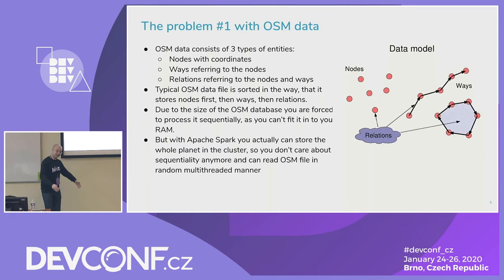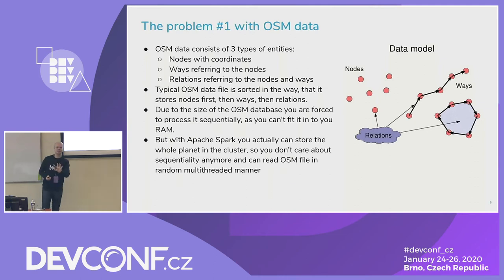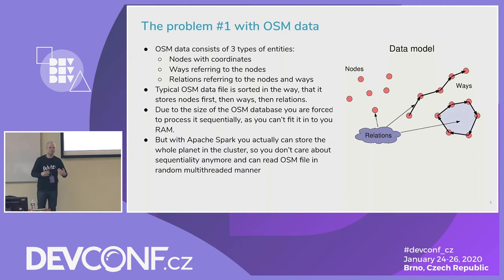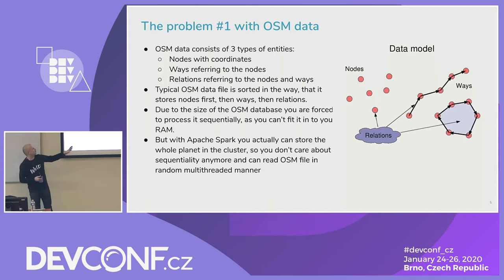The file is compressed, roughly 50 gigabytes, but internally it's 1.2 terabytes of data and you can't fit it in RAM. Because of that, there is a convention: nodes are stored before ways, and ways are stored before relations. So if you read the file sequentially, when you hit the first way you've probably already seen all the nodes and can reconstruct the geometry of the way. Same applies to relations, except for the relation hierarchy.